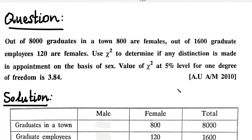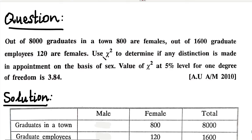Hi students. In this video we are interested in one Chi-square test problem. Out of 8000 graduates in a town, 800 are females. Out of 1600 graduate employees, 120 are females. Use Chi-square to determine if any distinction is made in appointment on the basis of sex. The value of Chi-square at 5% level for 1 degree of freedom is 3.84.